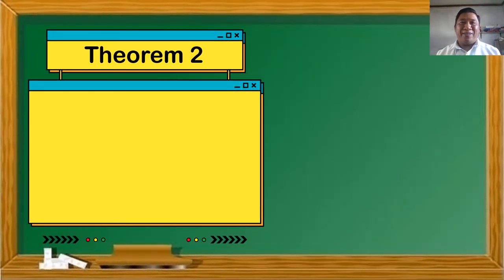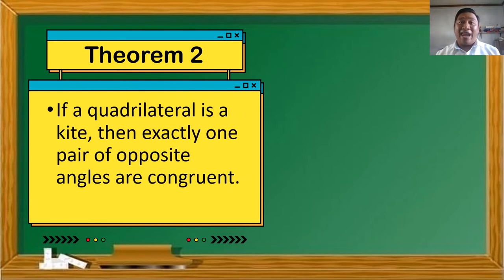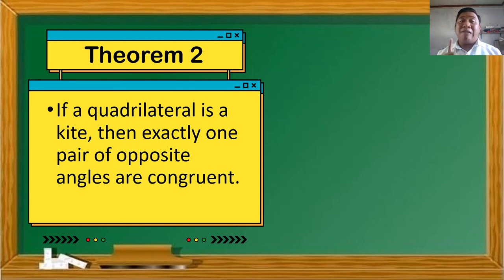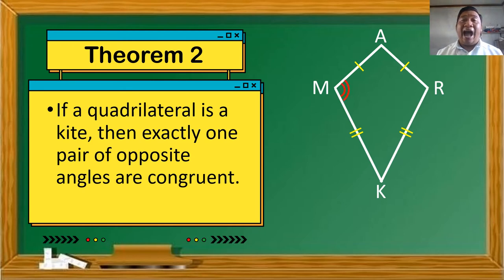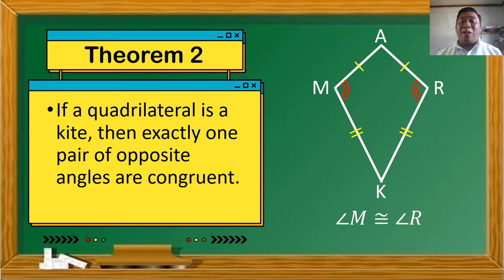Theorem Number 2: If a quadrilateral is a kite, then exactly one pair of opposite angles are congruent. Looking at kite M-A-R-K, angle M and angle R are the one pair of congruent opposite angles. We can say that angle M is congruent to angle R, meaning their measurements are equal.